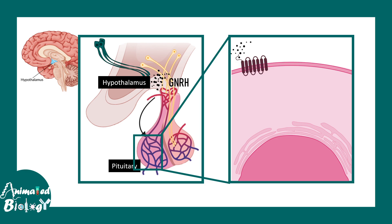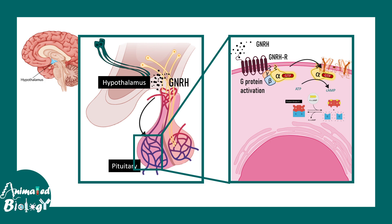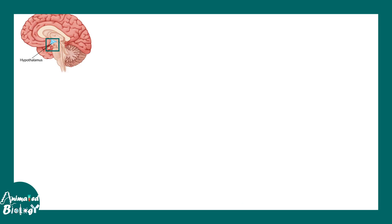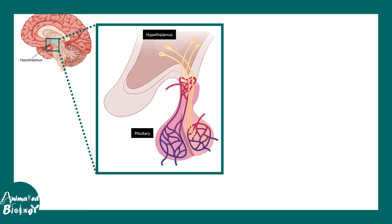On the surface of the gonadotroph cells there are specific receptors for GnRH, known as GnRH receptors. This signaling leads to G-protein activation and cyclic AMP generation. The cyclic AMP activates Protein Kinase A, whose catalytic domain reaches the nucleus and leads to gene transcription, resulting in the production of enzymes and molecules required for LH and FSH biosynthesis — the two important gonadotrophins.